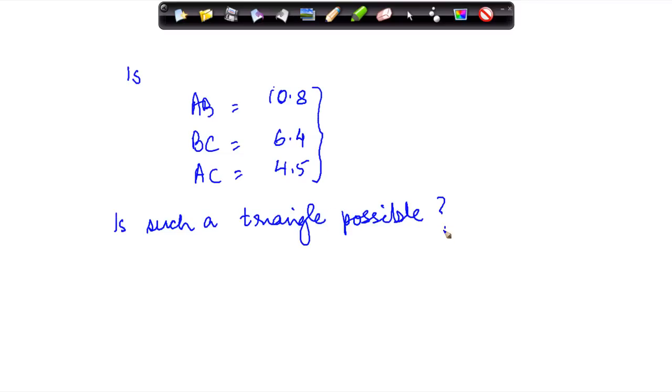What do you mean by this? Now if you apply the property that we discussed above, we know that the sum of two sides of a triangle cannot be more than the third side, right. Now this being the largest one, suppose I do 10.8 plus 6.4, what do I get? I get 17.2 which is obviously greater than the third side which is 4.5.